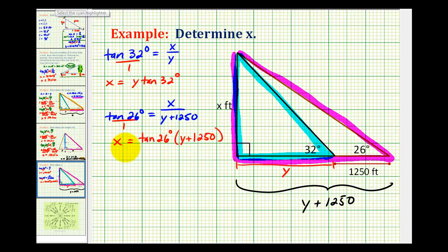Now notice that both of these equations involve x and y, but they're also both solved for x. So if they're both equal to x, we can set y times tangent 32 degrees equal to tangent 26 degrees times the quantity y plus 1,250.